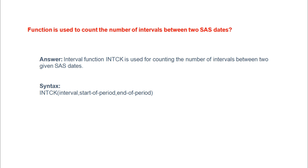The nineteenth question: which function is used to count the number of intervals between two dates? The INTCK function is used to count the number of intervals between two given dates. Additionally, the INTNX function can be used to increment a date by a specified number of months or years, and also to calculate the last date of every month. The syntax includes the interval, start period, and end period.